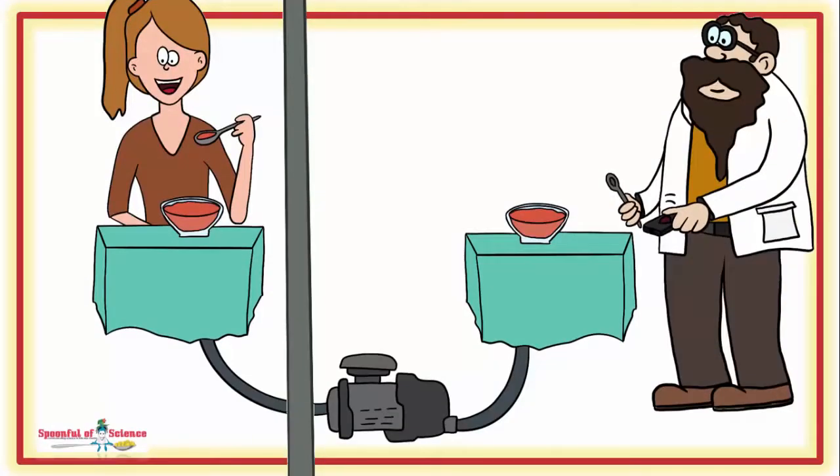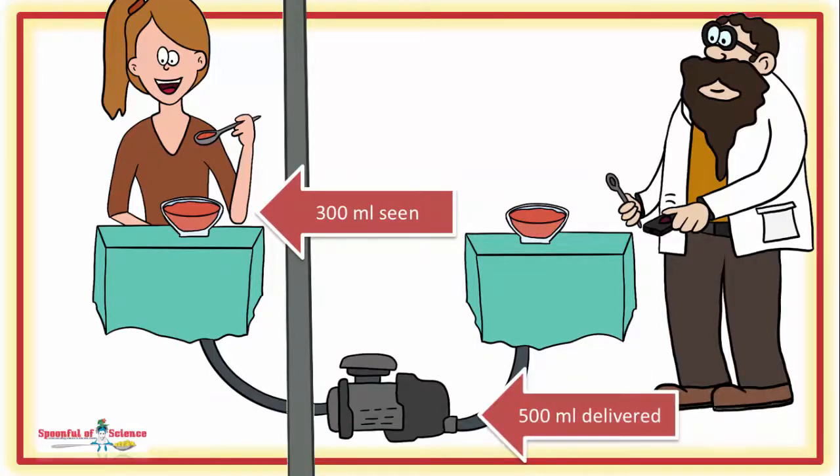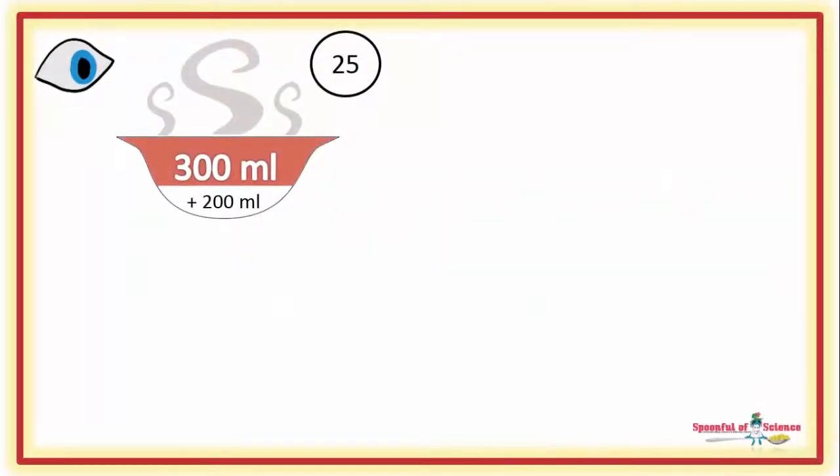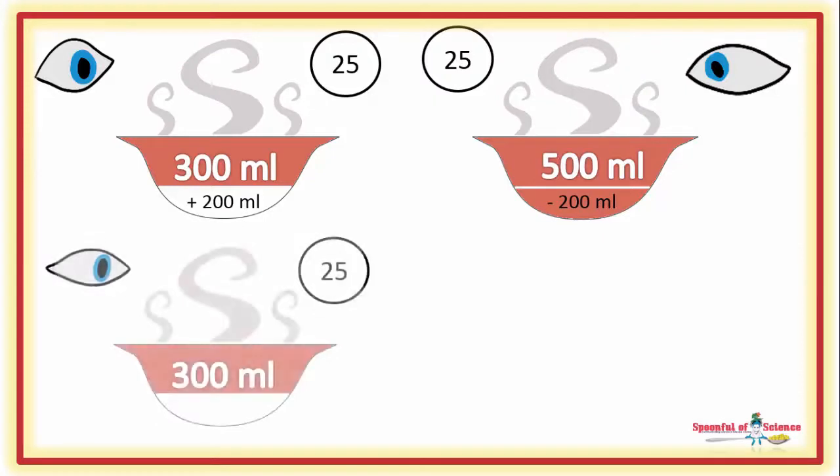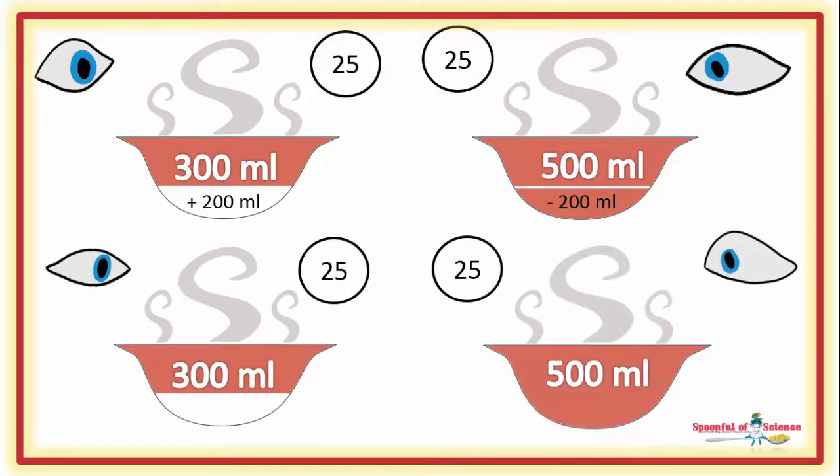Their soup bowls had been doctored. Everyone did get soup, but how much was manipulated using a hydraulic pump. So the amount of soup seen did not always correspond to the amount consumed. 25 volunteers saw 300 ml of soup and got 500. Another 25 saw 500 ml but were short-changed, getting only 300 ml. The rest got what they saw: one group got 300 ml and the other 500 ml.